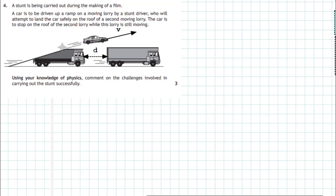A car is to be driven up a ramp on a moving lorry by a stunt driver who will attempt to land the car safely on the roof of the second moving lorry. The car is to stop on the roof of the second lorry while the lorry is still moving.